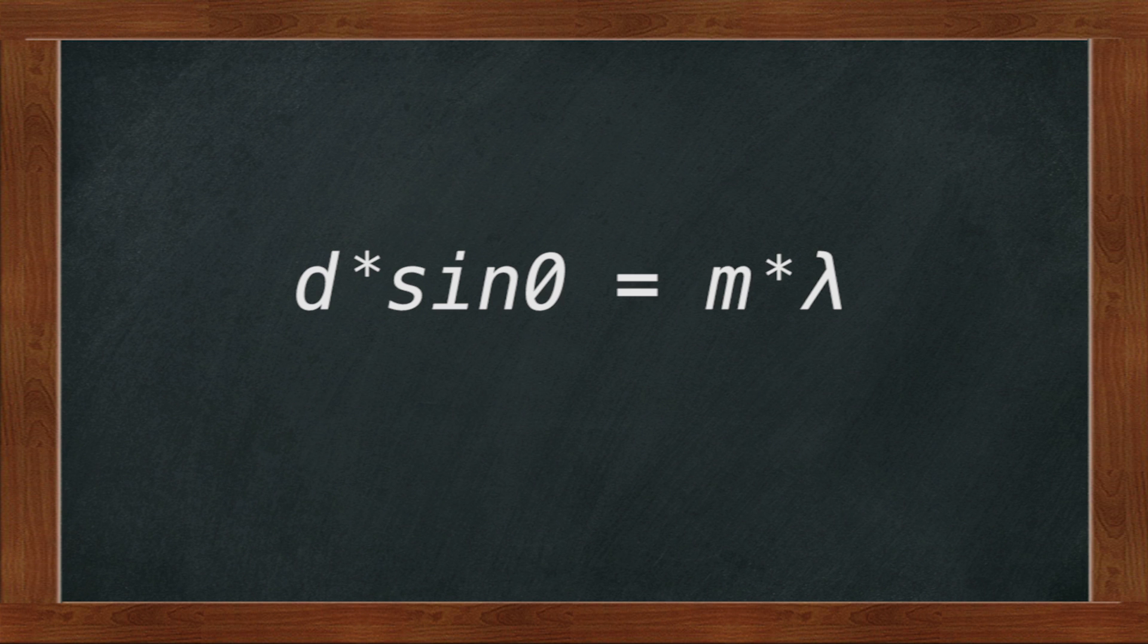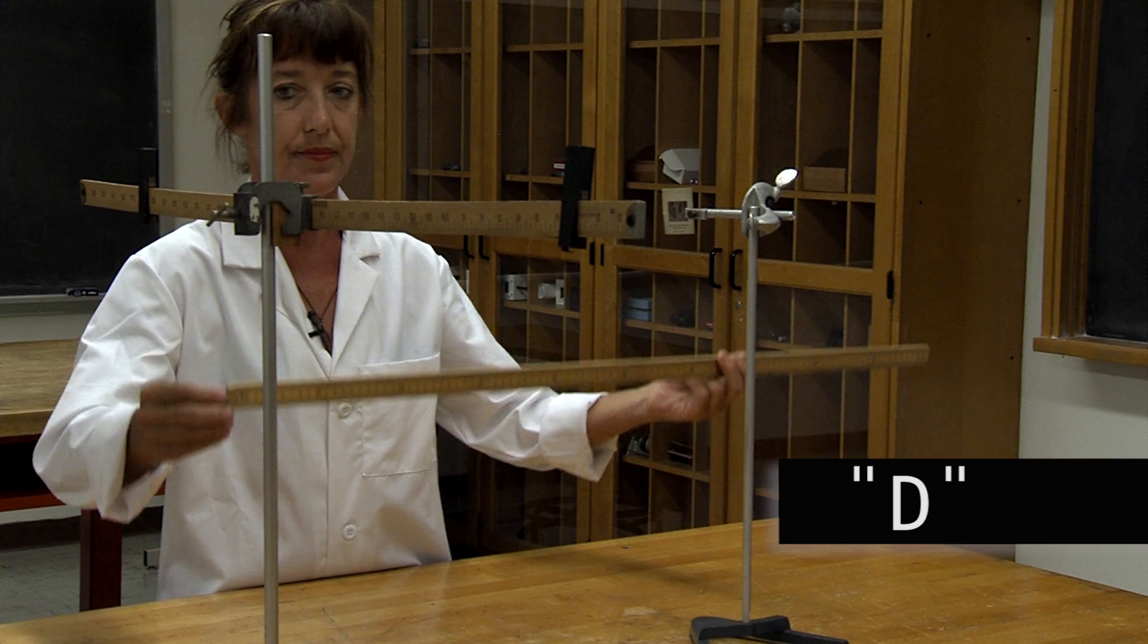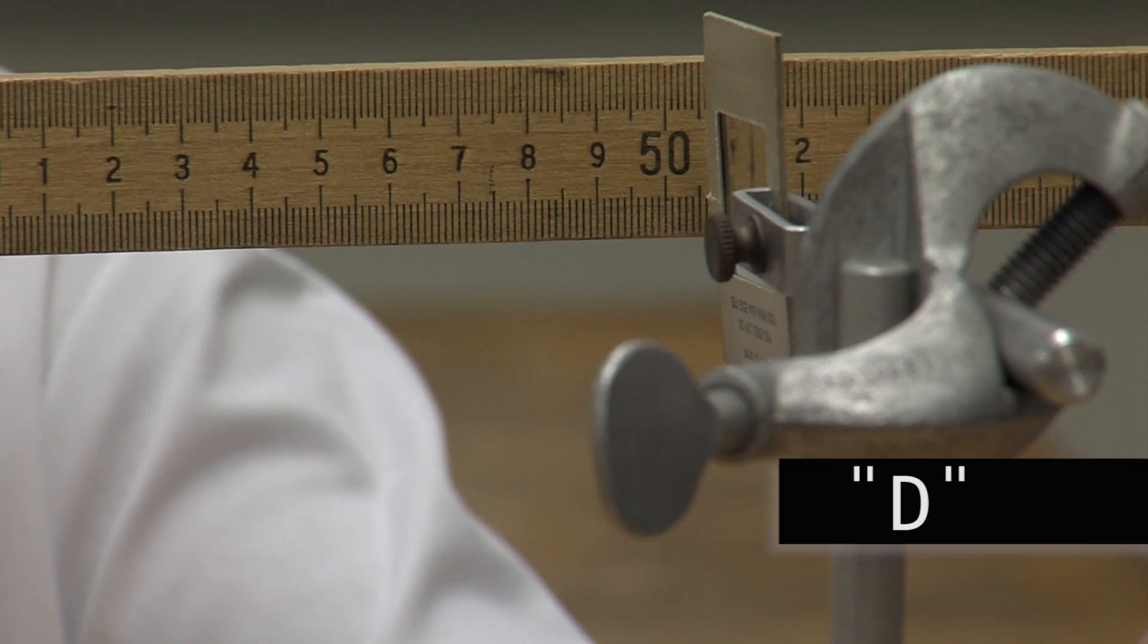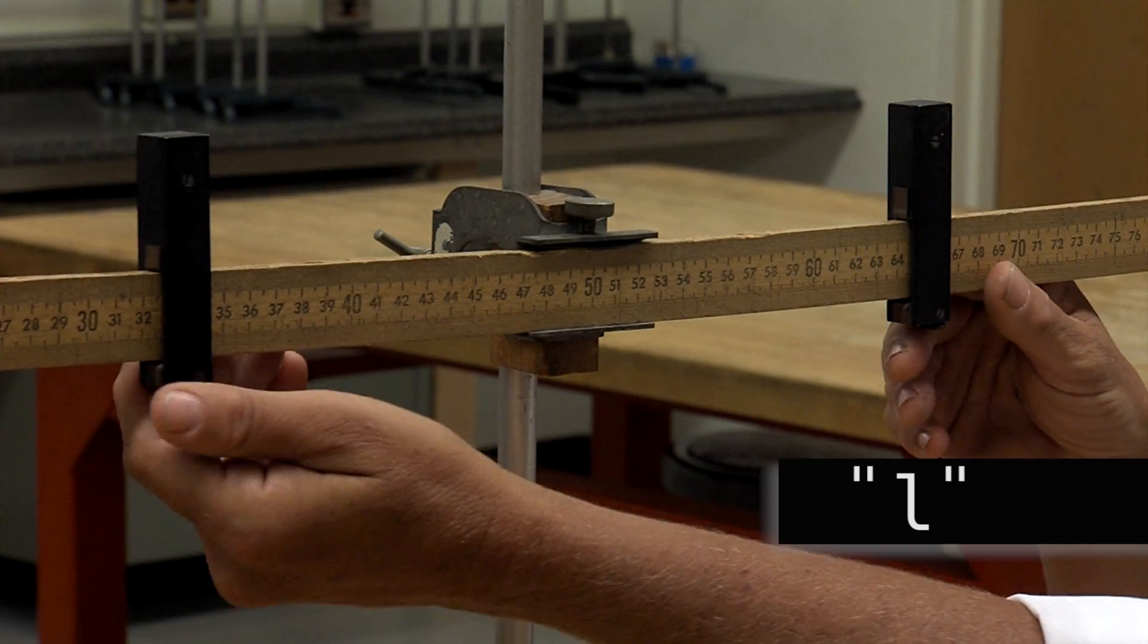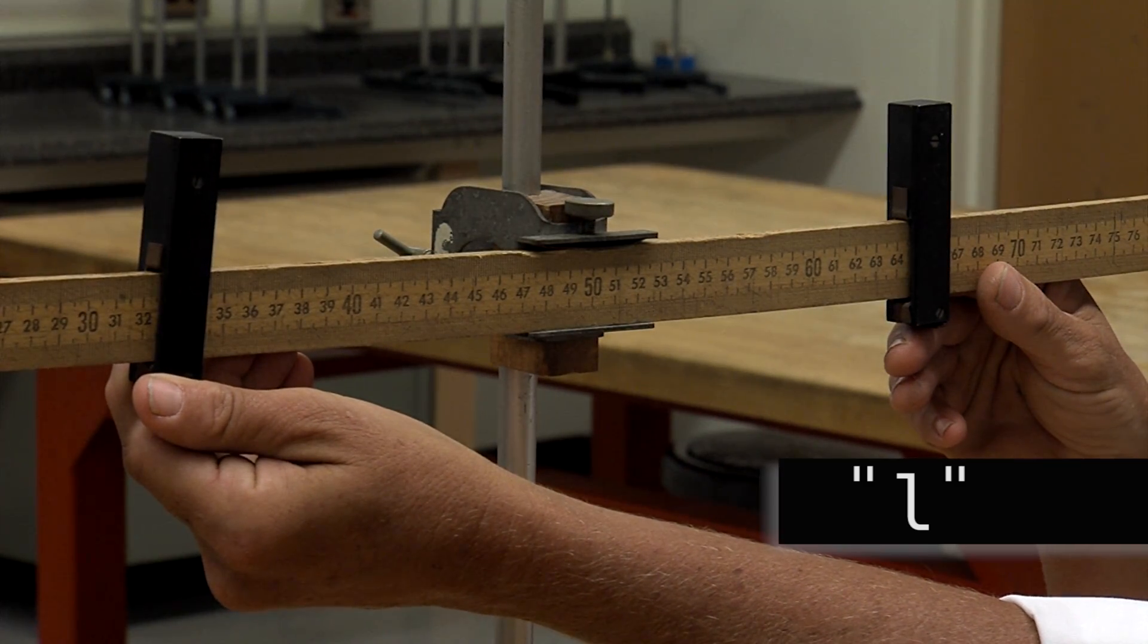You will use data from your experiment to solve for theta. You will need two values: Capital D, which represents the distance from the grating to the meter stick and should be 50 centimeters, and L, which is one half the distance between pairs of wavelengths of the same order.